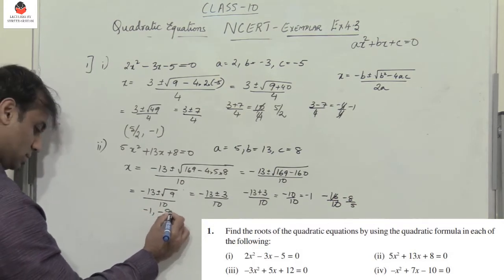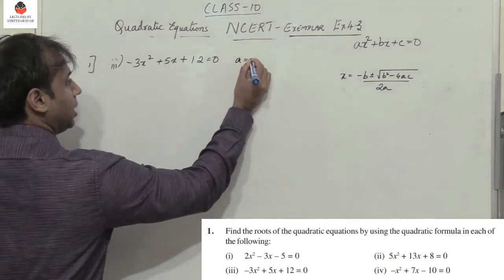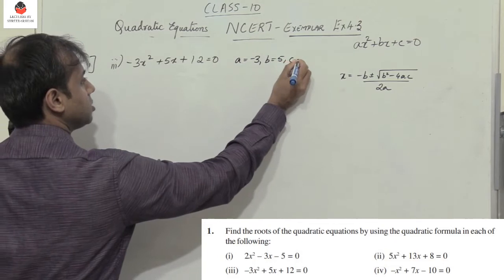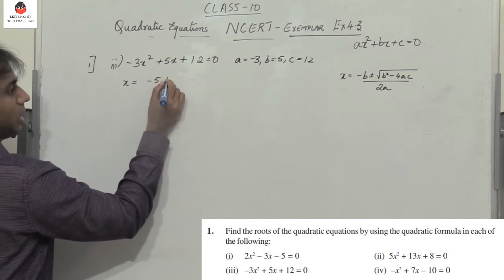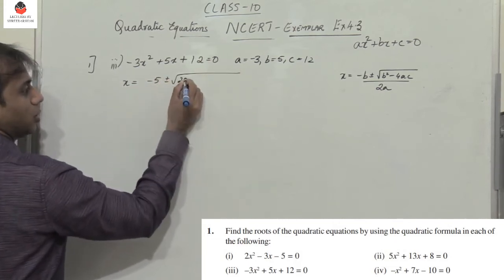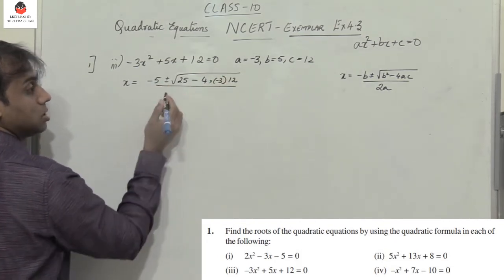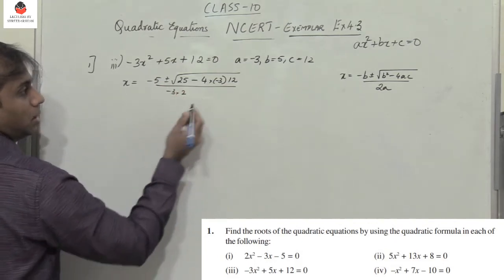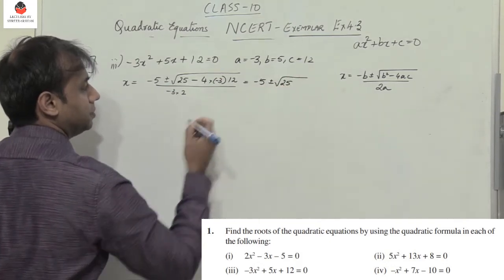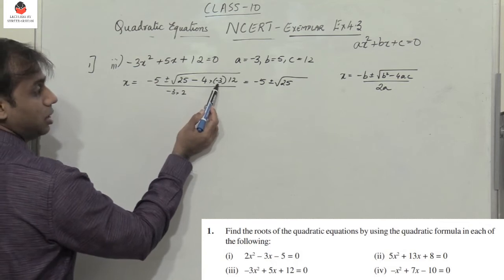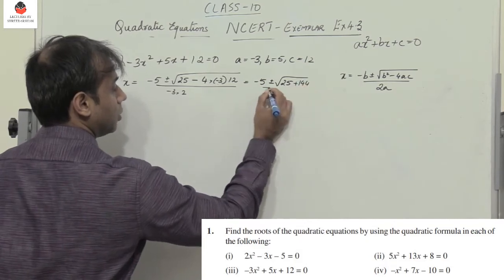Third equation: a is minus 3, b is 5, c is 12. So x equals minus b, which is minus 5, plus or minus root of b² — 5² is 25 — minus 4 into a, which is minus 3, into c, divided by 2a which is minus 3 into 2, giving minus 6. Here minus into minus gives plus, so 4 into 3 into 12 gives plus 144, divided by minus 6.